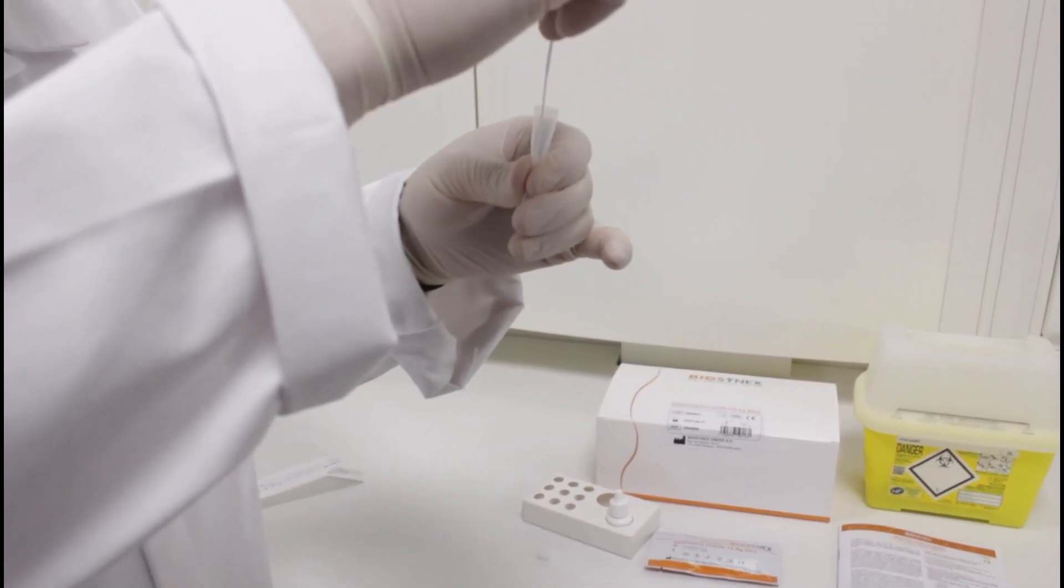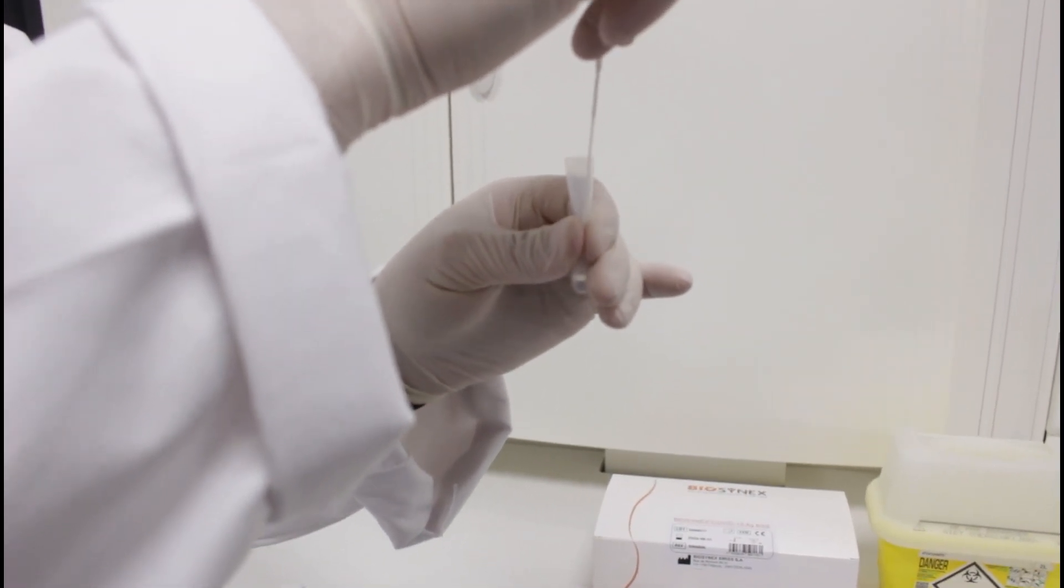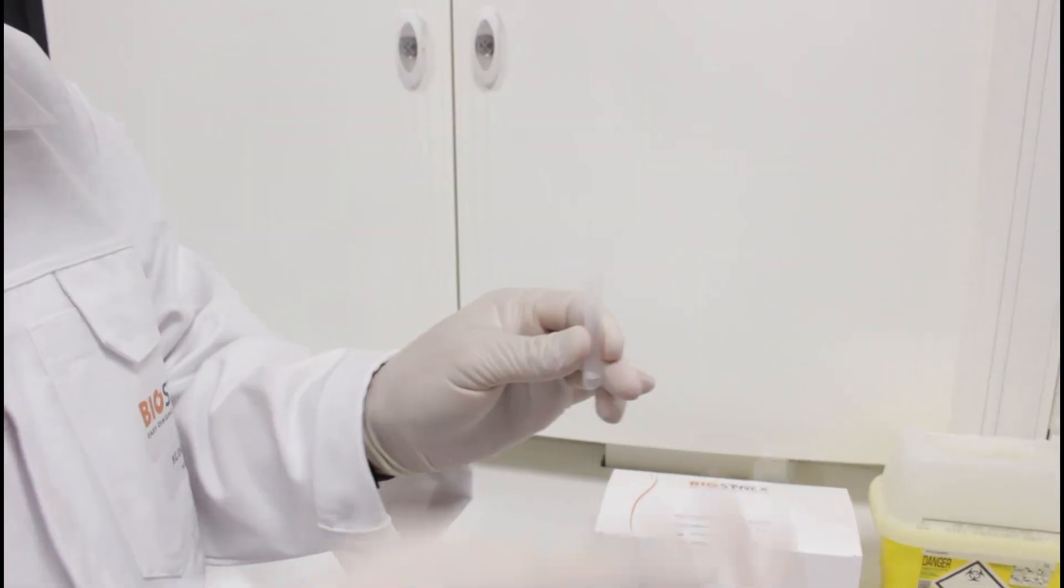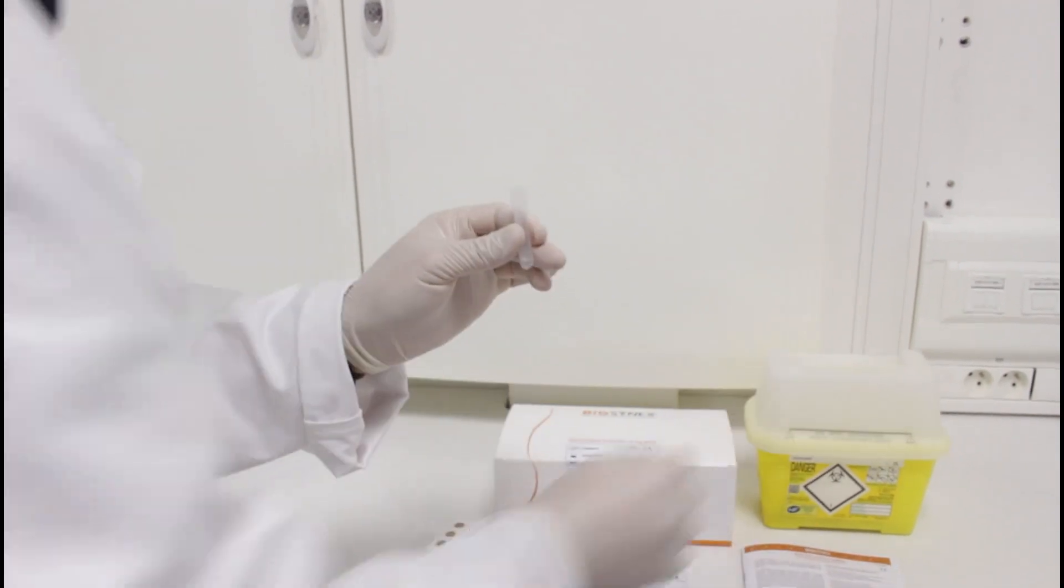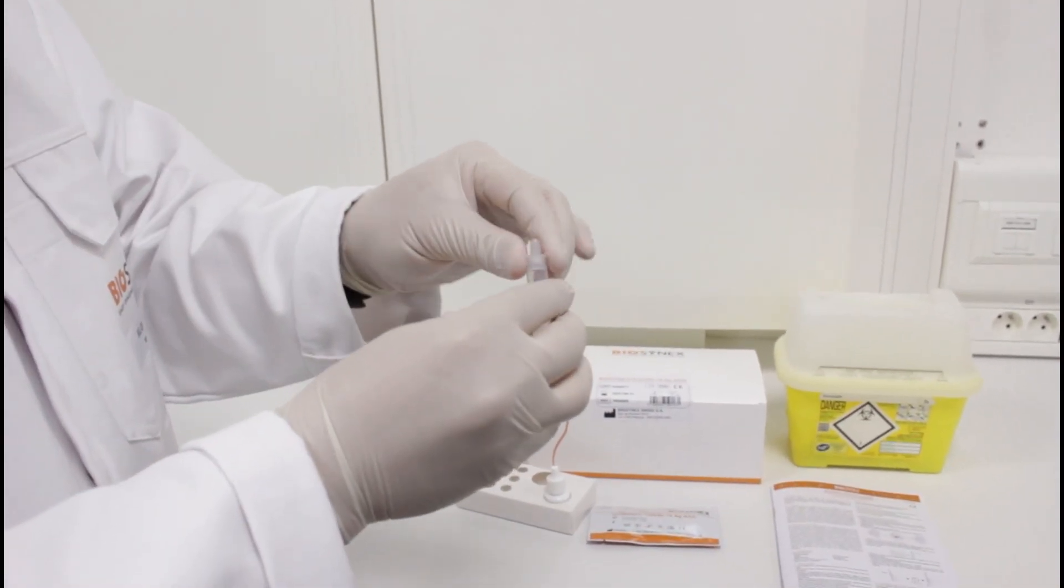To remove the sample swab, squeeze the tube several times to fully extract the sample from the swab. Then place the swab in a yellow bin. The extraction solution will be used as the test sample.